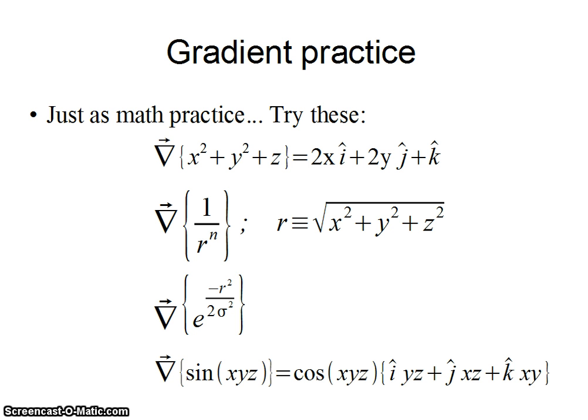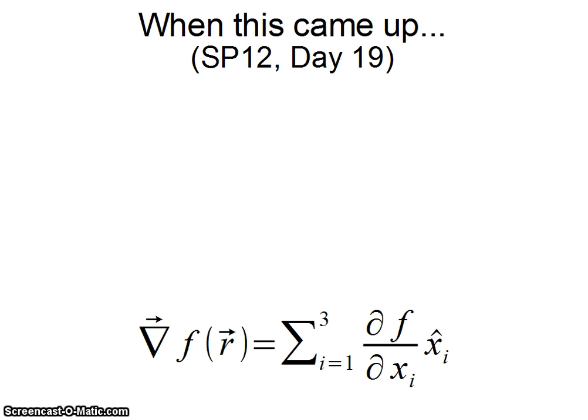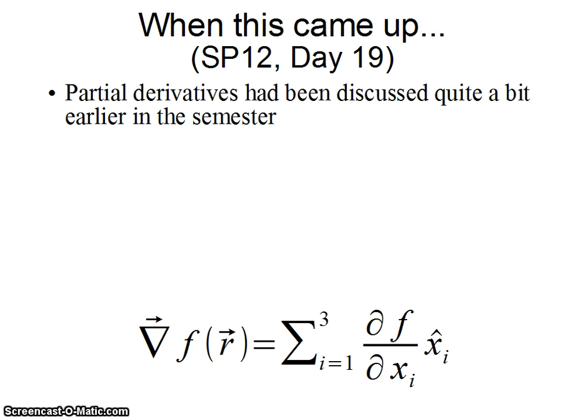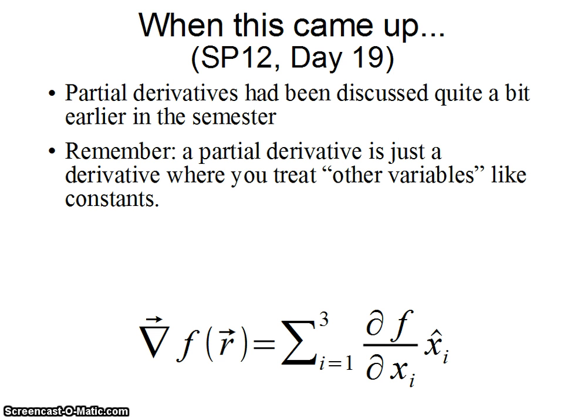Basically what we're going to talk through after a little review is how to deal with gradients, partial derivatives, when I have this function that's a function of only the distance from the origin and not independently the three coordinates. This came up in the class spring 12 this semester in our Physics 132 class on day 19. We had talked about partial derivatives quite a bit earlier in the semester when we do waves. This is a very different use. Partial derivatives are just derivatives where you treat other variables like constants, and in this case all the variables are variables of space x y and z.